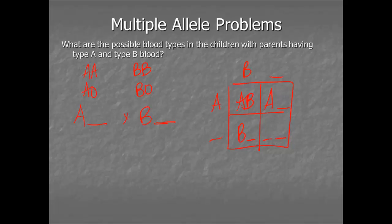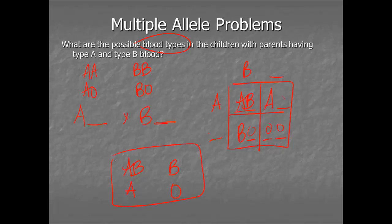So these parents could have AB children. If the blank was an O, they could have A blood type children. If the other blank was an O, they could have B blood type children. And if both blanks were O's, they could have O blood type children. So these parents can actually have all four blood types.